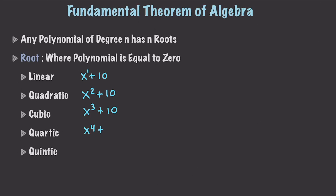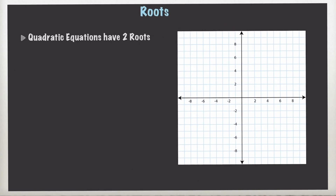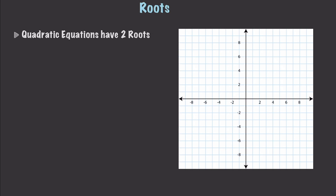So what this is saying is degree n — here are the degrees we have available. Depending upon the degree, that means that polynomial will have that many points where it equals zero. A quadratic equation, of course, has two roots. So let's run through a couple of examples.